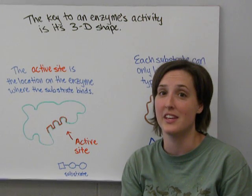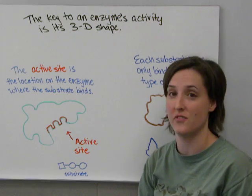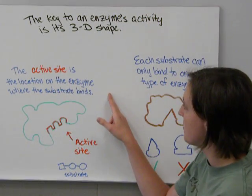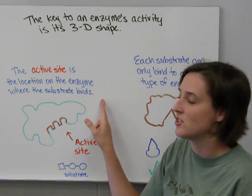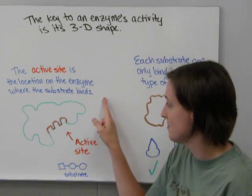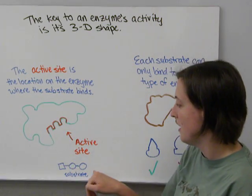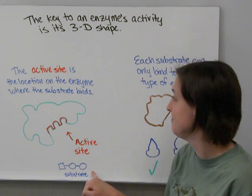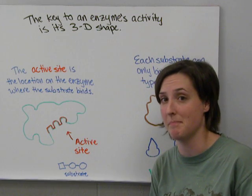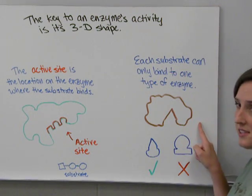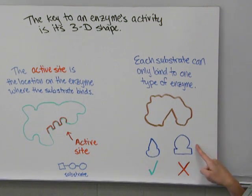The key to an enzyme's activity is its 3D shape — the shape of the enzyme is what confers its function. The active site on the enzyme, which is 3D, is where the substrate is going to bind. Each substrate can only bind to one type of enzyme. So this enzyme could bind a molecule that looks like this, but it can't bind a molecule that looks like this.